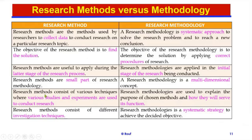Number five: research methods consist of various techniques where various studies and experiments are used to conduct research. On the other hand, research methodologies are used to explain the purpose of the chosen methods and how they will serve their function.